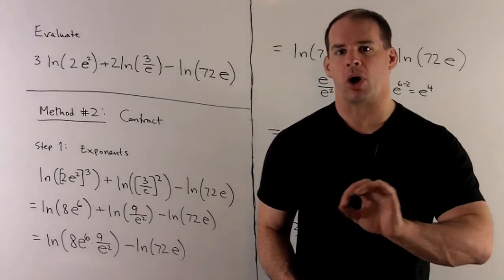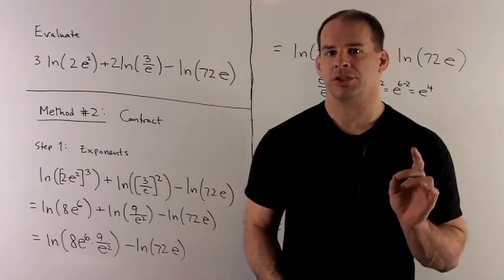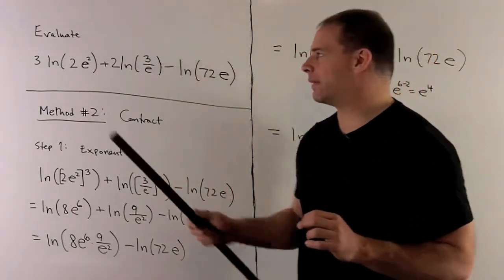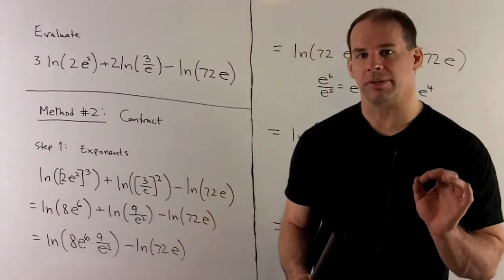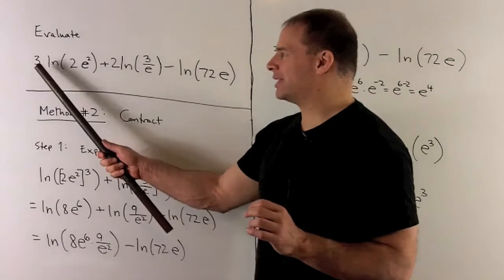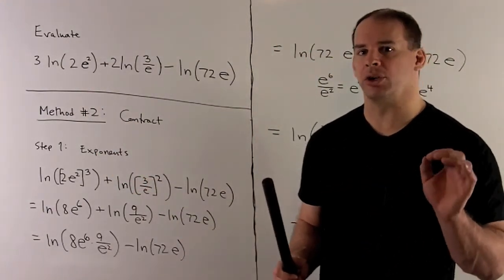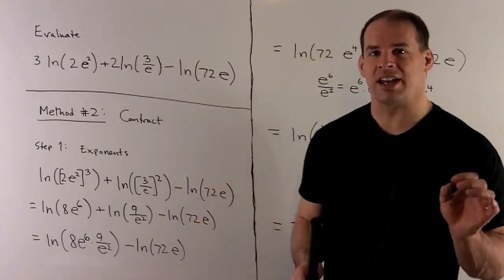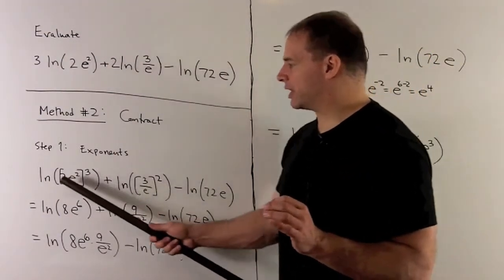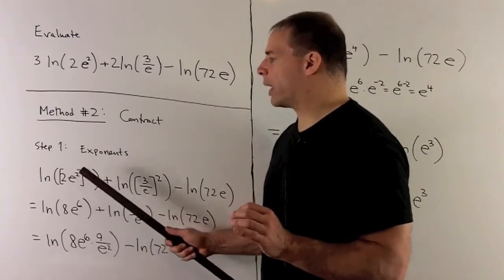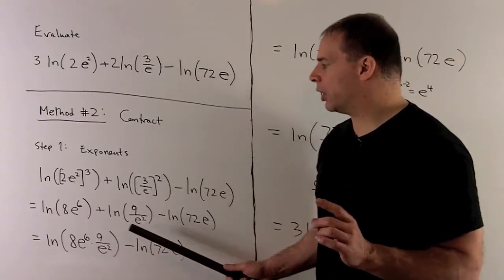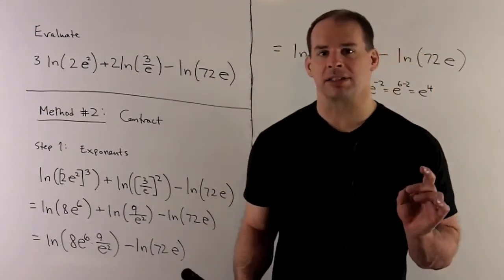We have sums and differences of natural logs, but the problem is we have constants out in front. To fix that, we bring them inside as exponents. So we take the 3 and put it inside: natural log of (2e squared) cubed. Then we take the 2 and bring it inside as a square: natural log of (3 over e) squared. Simplifying: 2 cubed is 8, e squared cubed is e to the 6th, giving natural log of 8e to the 6th; and (3 over e) squared gives natural log of 9 over e squared. Now there are no constants out in front, so we can apply the product and quotient rules.